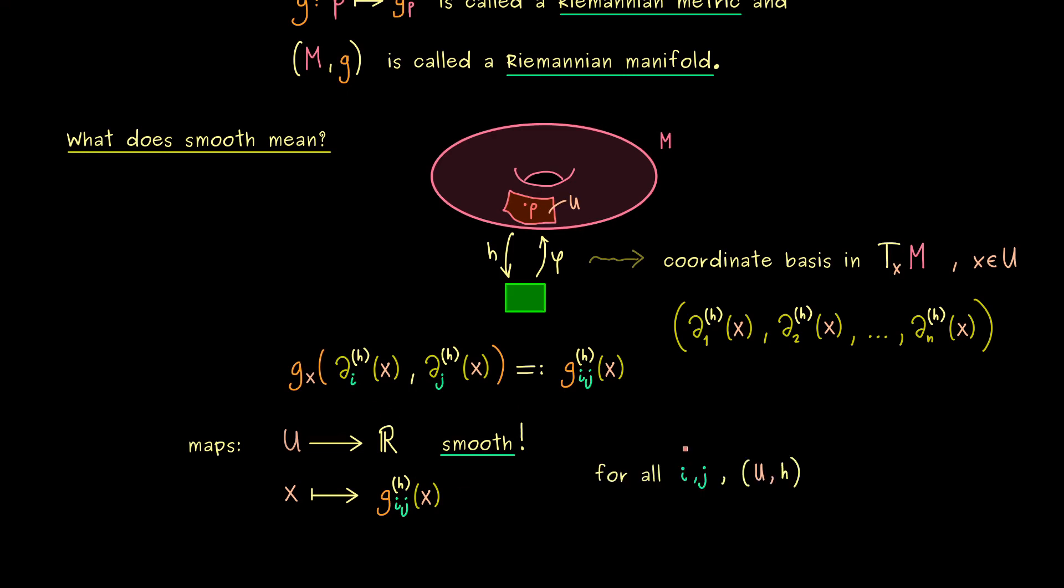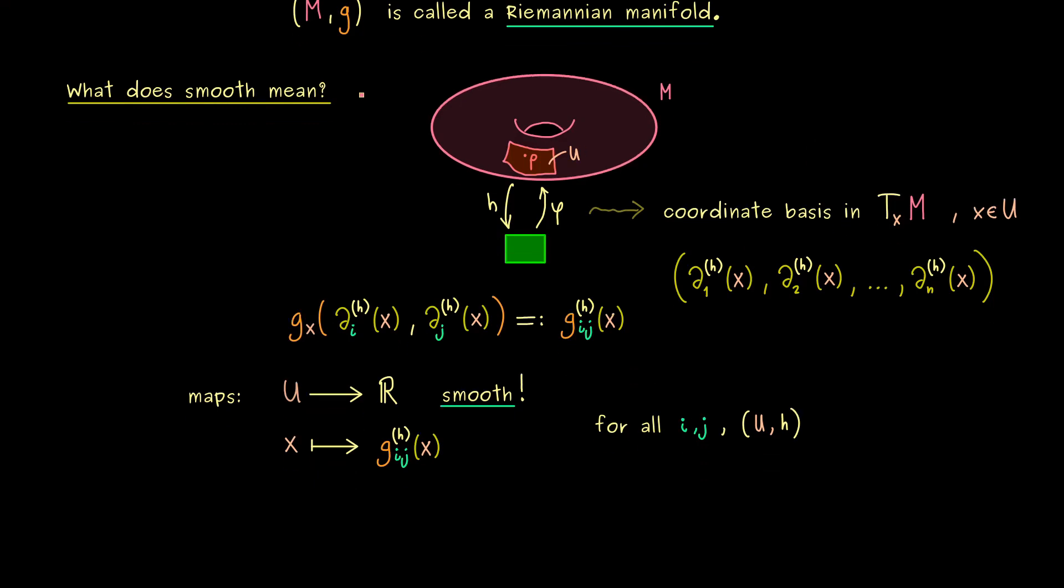With this, I would say we have understood the definition of a Riemannian manifold. Moreover, we also got a local representation of this important Riemannian metric. In other words, g_x can be represented by a sum of one forms. And in order to make it compact, we will use the Einstein summation convention. This means we will sum over indices without writing the sum sign.